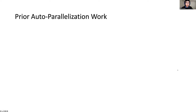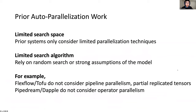There are several prior auto-parallelization systems. However, they all have limitations and cannot efficiently train state-of-the-art large models. Their search spaces are limited because none supports all the parallelization techniques mentioned. Their search algorithms cannot scale to large models — they either rely on random search or strong assumptions about the model. For example, FlexFlow and Tofu don't consider pipeline parallelism or partially replicated tensors. PipeDream and Dapple don't consider operator-level parallelism like Megatron-style partitioning.